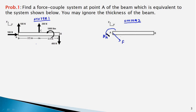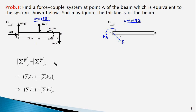The first condition is that the vectorial sum of all forces under system 1 is equal to the force F acting at point A. This is a vector equation and can be broken up into scalar equations. Since the forces are in the XY plane, the sum of the X components of the forces under the two systems would be equal, and similarly the sum of the Y components would also be equal.